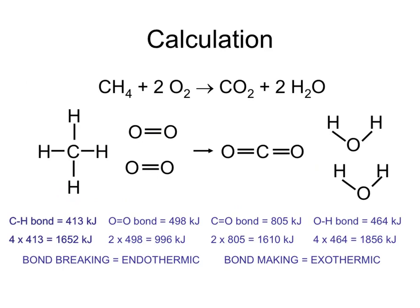The energy needed to break a carbon-hydrogen bond is 413 kilojoules, so breaking four carbon-hydrogen bonds involves 4 times 413, which is 1,652 kilojoules. To break the two oxygen-oxygen bonds, each one is 498 kilojoules, so two of them are 996 kilojoules.